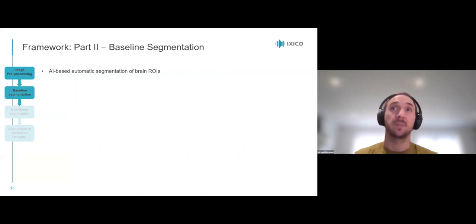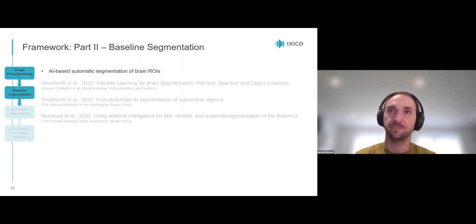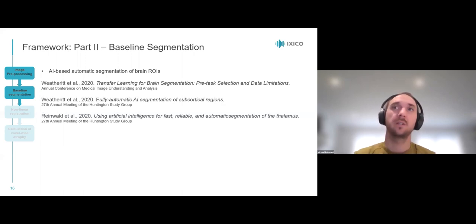Part two, baseline segmentations. In this step, we generate the region of interest masks in which we want to calculate atrophy. Ixico has recently published several novel AI algorithms for semantic segmentation of brain structures, including caudate, putamen, hippocampus, and thalamus, and represented those results at MIUA and the Hampton study group meeting last year. Here you can see a few of the titles.